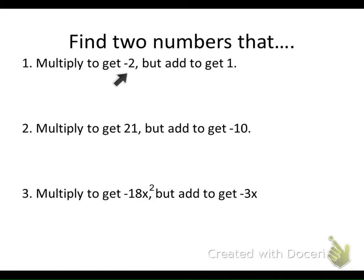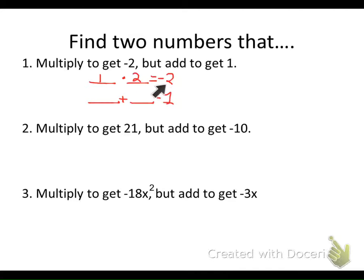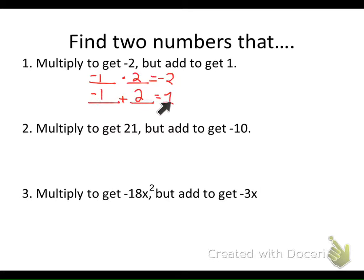For this first one, we're going to look for two numbers that multiply to give us negative two, but when we add those same two numbers, we get one. Numbers that multiply to get two — as far as integer factors, there's really just one and two. Since they multiply to give a negative two, either the first or second number is negative. Looking at the second condition, we need them to add to one. Negative one times two is negative two, and negative one plus two is one. So our numbers are negative one and two.